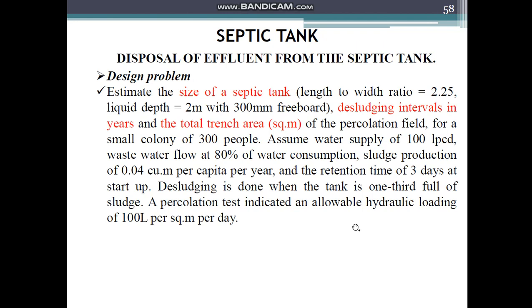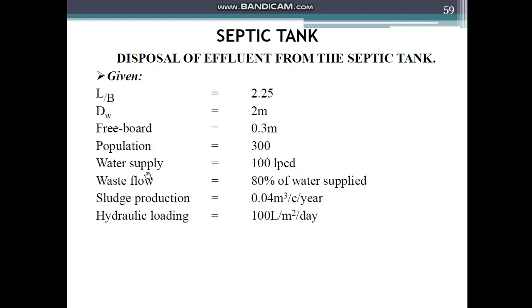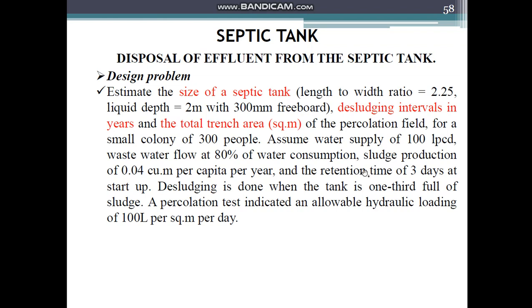The next numerical: estimate the size of a septic tank where the length-to-width ratio is 2.25, liquid depth is 2 meters with 300 mm freeboard. The desludging interval in years and the total trench area in square meters of the percolation field are to be calculated. For a small colony of 300 people, assume water supply of 100 liters per capita per day, wastewater flow at 80% of water consumption, sludge production of 0.04 cubic meters per capita per year, retention time of 3 days at startup, desludging when the tank is one-third full of sludge, and an allowable hydraulic loading of 100 liters per square meter per day.